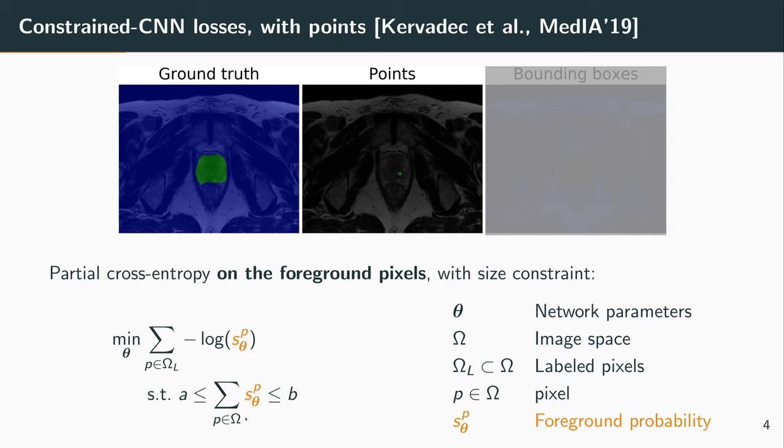But at the same time, we were constraining its output so that the size of the predicted segmentation, so basically the sum of all the softmax probabilities over the whole image, and not just the labeled part, but the whole image. And we wanted this predicted size of the prediction to be between two values, A and B.